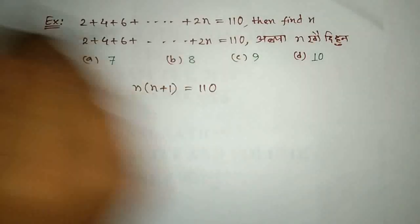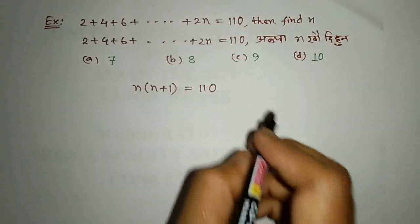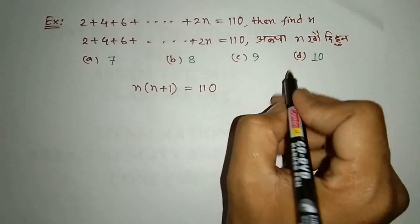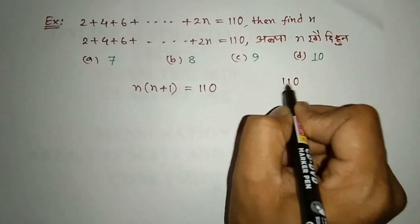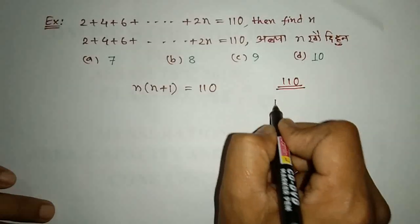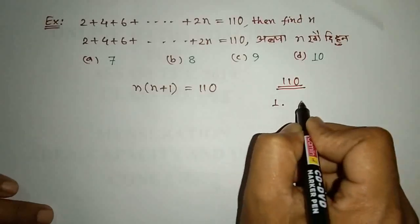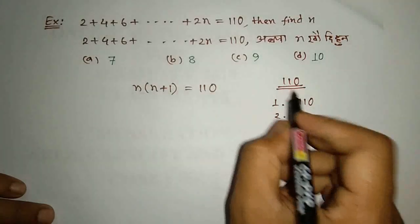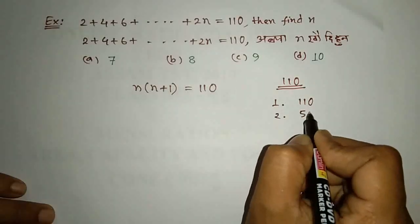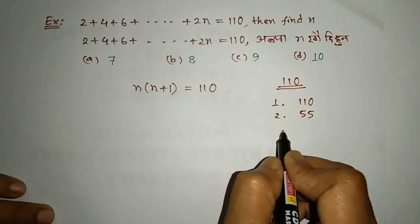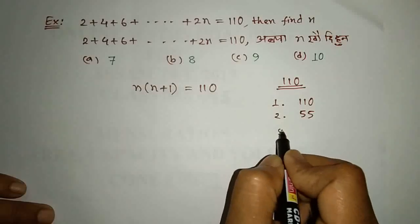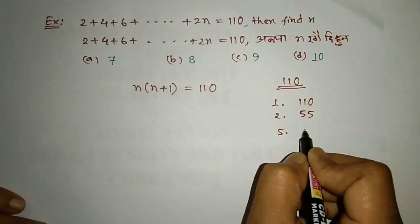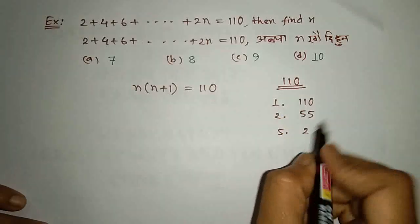This will be 2 plus 4 plus 6 plus 9 and n plus 1 formula will be 1. The shortcut method: 1 into 0 is 1, 0 and 2 is 1, 5 into 5 is 10, which gives 55. Then 5 into 5 into 2 is 10, giving 22.